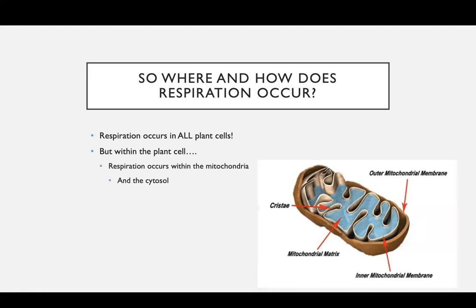Within a mitochondria, you have this outer mitochondrial membrane, and that's what separates the mitochondria from the rest of the cell. You have an inner mitochondrial membrane, and that holds your mitochondrial matrix. And these little folds are called cristae.